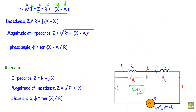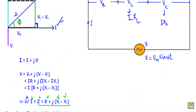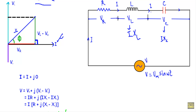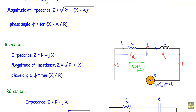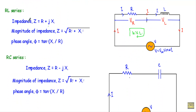Now let me show you the impedance of a series RL circuit. Always remember the general formula: Z equals R + j(XL − XC) for a series RLC circuit. If there is no capacitor, the XC term is zero. If there is no inductance, the XL term is zero. If there is no resistance, the R term is zero. Using that formula, I can write down the impedance of an RL series circuit.